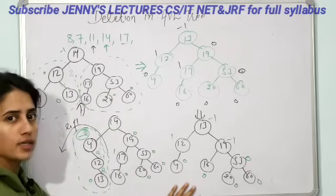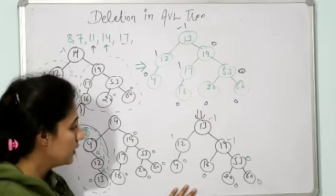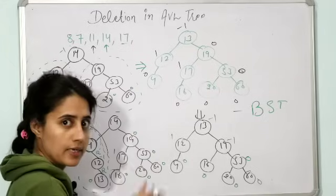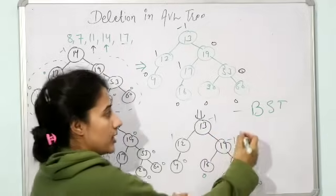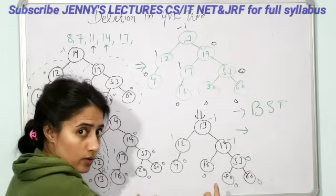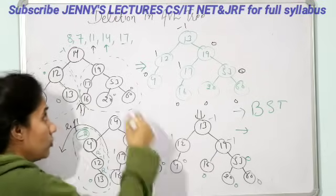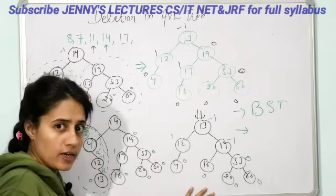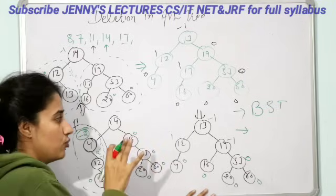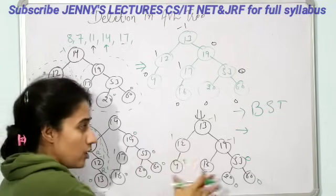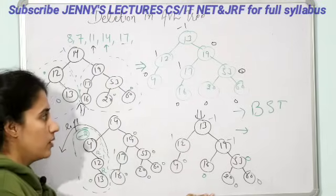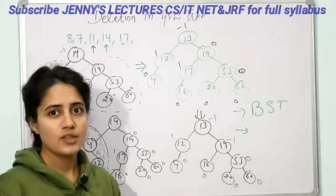This is how you can delete data from an AVL tree. Just remember: first step — delete data same as you delete in BST. Second step — after deletion, check out the balance factor of each node. If the tree is balanced, you can proceed to delete the next number. If the tree is unbalanced, check out which rotation is needed to balance it out first, then proceed with your deletion.